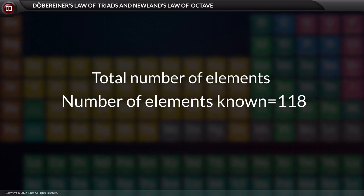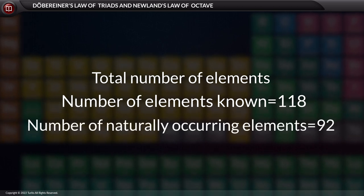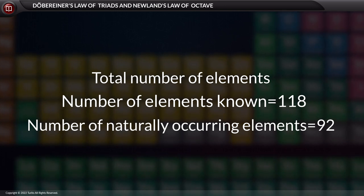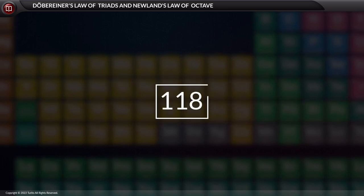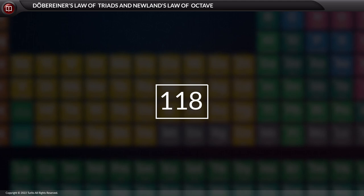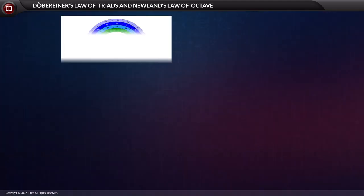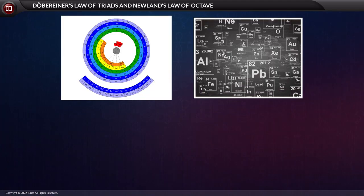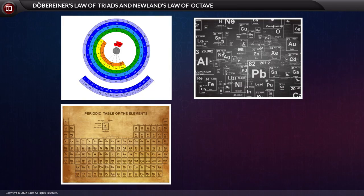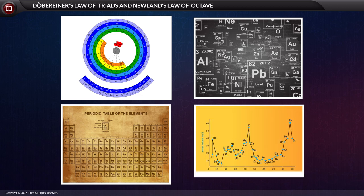Out of these 118 elements, 92 are naturally occurring and the remaining are synthetically produced. 118 is a huge number, and given this large count, there often feels a need to systematically organize the elements in the form of a table, a sphere, or even a graph.